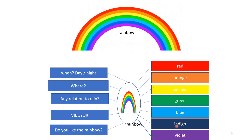VIBGYOR: V refers to Violet, I for Indigo, B for Blue, G for Green, Y for Yellow, O for Orange, R for Red. I want to interact with the children, so I put a question here: Do you like the rainbow? I coined another question: Is there any relation to rain with this rainbow? Children interact and generate some vocabulary. Where can you find this rainbow? Quite naturally, they say in the sky. When does it appear? During the daytime — they never say at night. All this vocabulary can be generated by using this mind map.